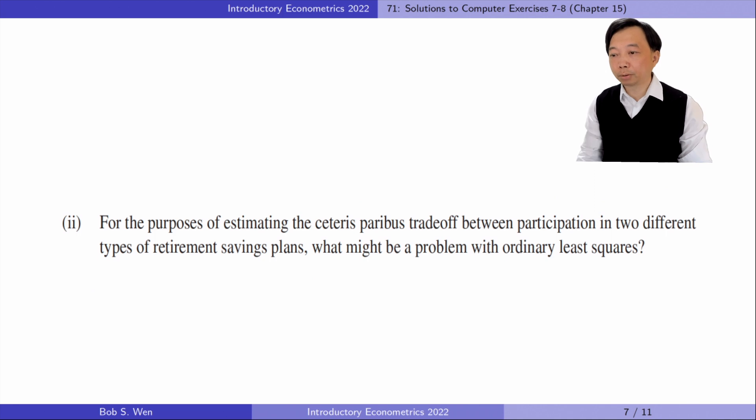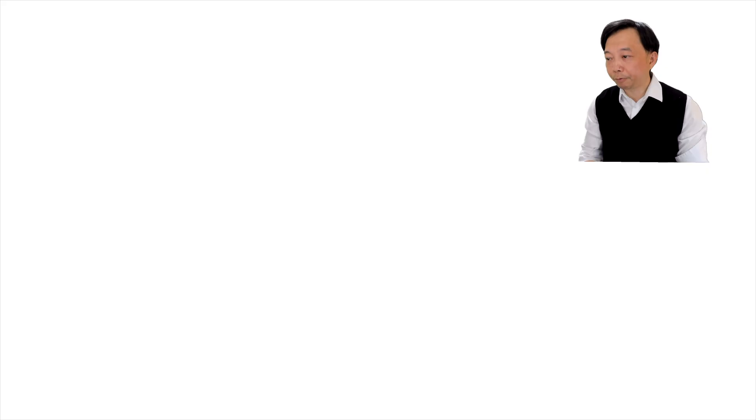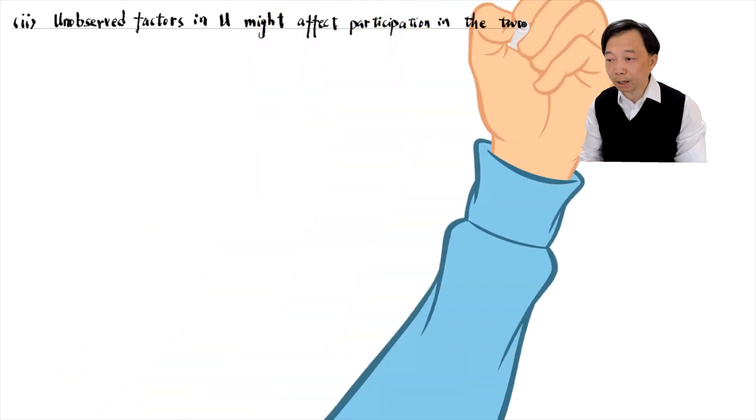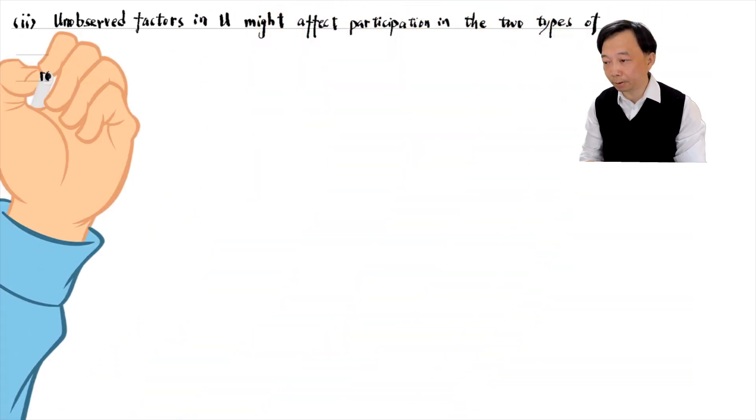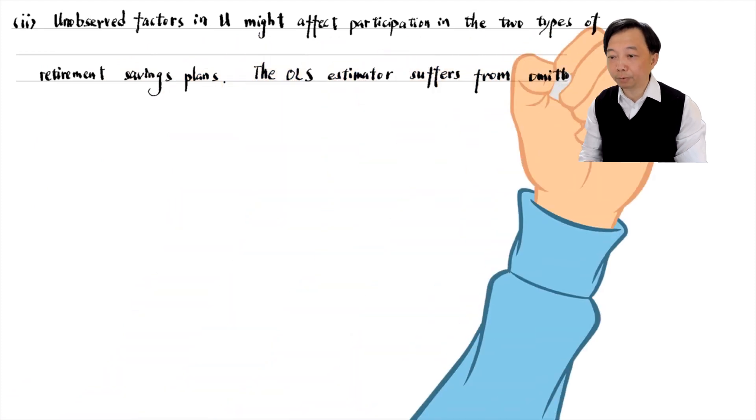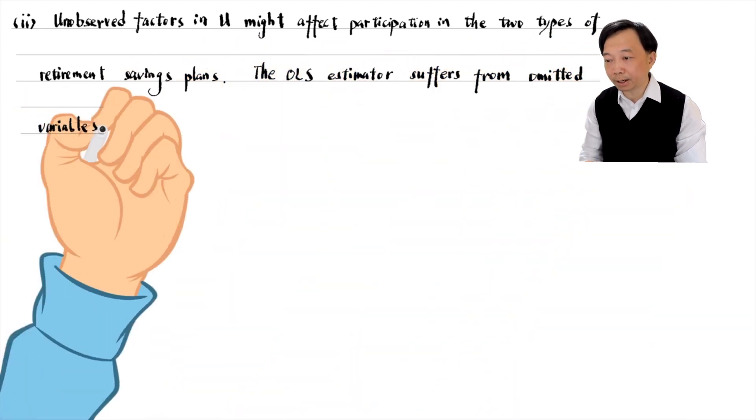In part 2, to estimate the ceteris paribus trade-off between participation in two different types of retirement saving plans, the OLS estimator suffers from omitted variable bias as a result.